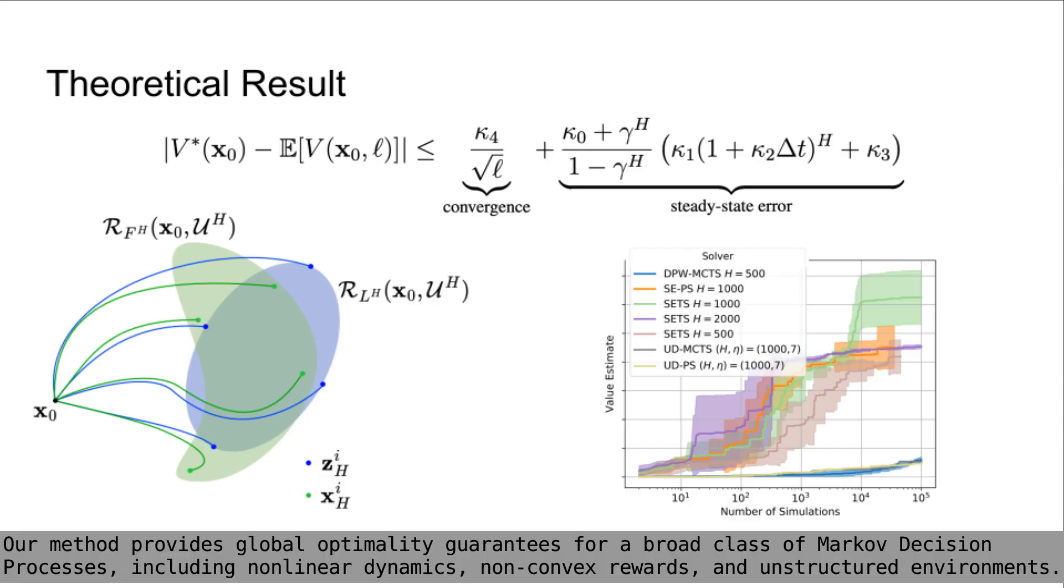Our method provides global optimality guarantees for a broad class of Markov decision processes, including non-linear dynamics, non-convex rewards, and unstructured environments.